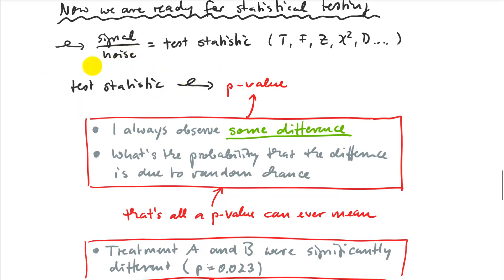The test statistic is influenced a little by your degrees of freedom — the F-distribution changes shape depending on degrees of freedom. But in principle, if you have a signal-to-noise ratio of four, that leads to a very small p-value. The p-value is that signal-to-noise ratio expressed as a probability that the difference you observed is due to random chance. You always see some difference between treatment A and treatment B — they will never be exactly the same — the question is: what's the probability that difference is due to random chance?